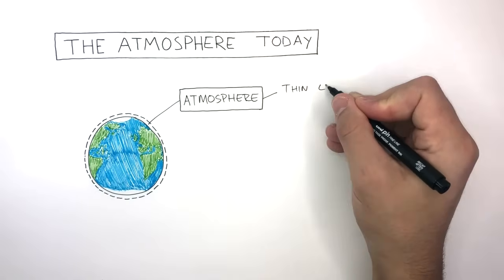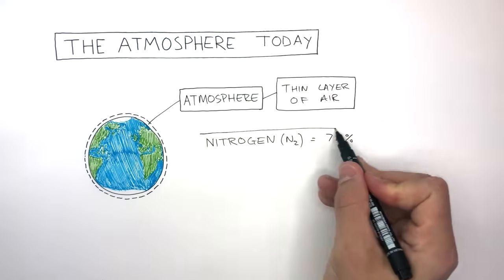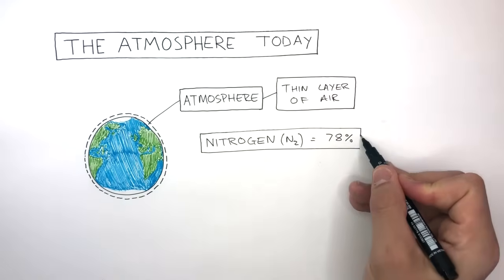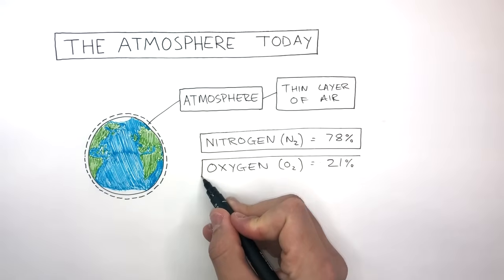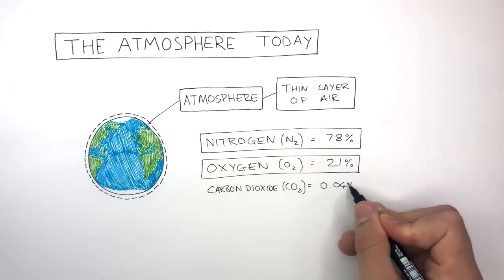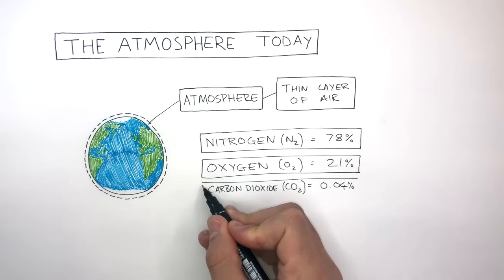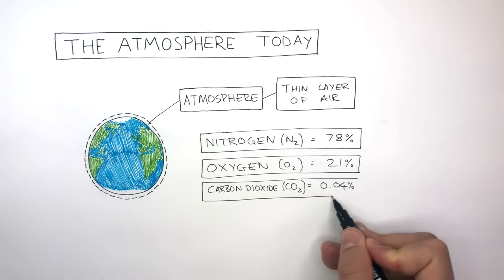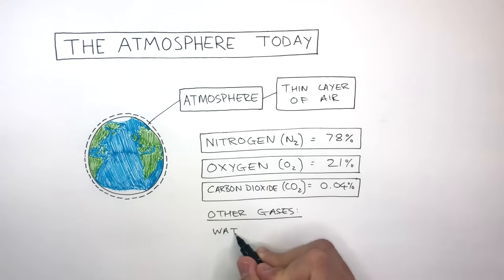The atmosphere is a thin layer of air made up of different gases. The atmosphere today consists of 78% nitrogen, which is an inert gas, 21% oxygen, which all living organisms use for respiration, 0.04% carbon dioxide, which is a very important greenhouse gas that keeps our Earth warm, and finally other gases such as water vapour, methane, and argon.